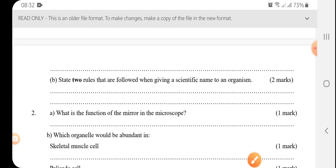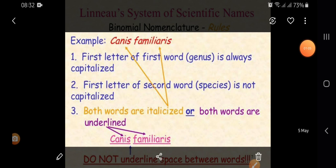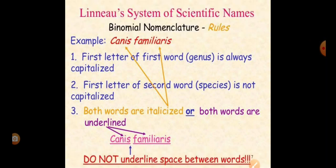State two rules followed when giving scientific names to organisms. They include the first letter, which of the genus is always capitalized. The second letter of the species is written in small letters. And when handwritten, the two names should be underlined separately.